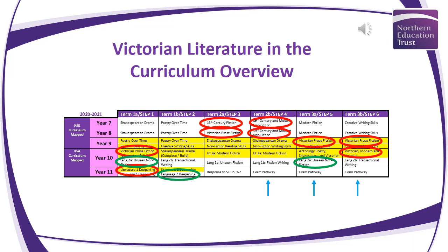By the time we move into Year 9, in Terms 3a and 3b, we begin to look at A Christmas Carol, starting with the overview, the plot, and some of the characters. Moving into Year 10 in Term 1a, we start to develop our understanding of key concepts. We revisit it again in Year 10 Term 3b to deepen understanding, and by Year 11 Term 1a, we're really deepening that understanding. So we have a clear thread of Victorian literature from Year 7 to Year 11.